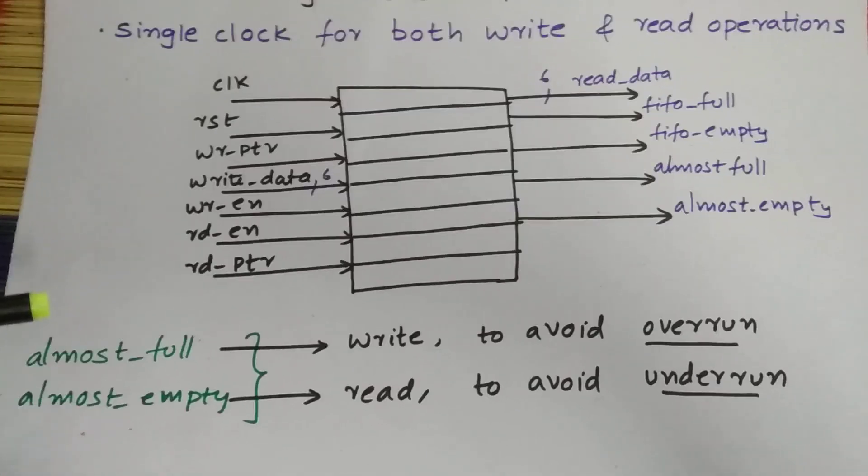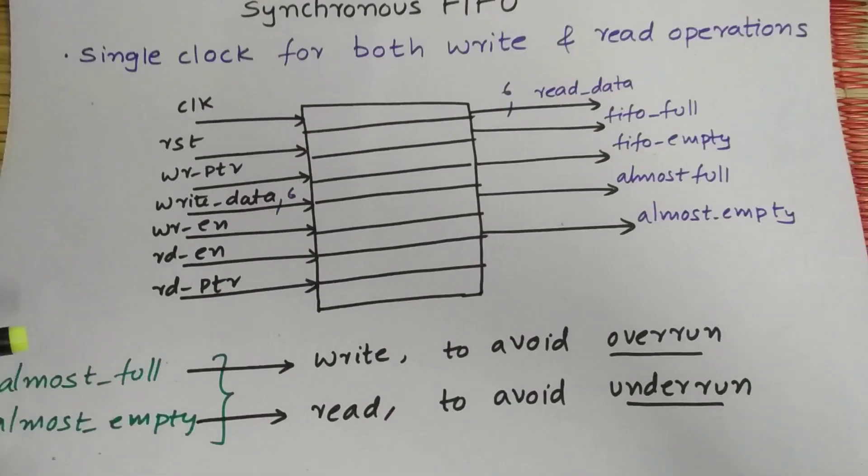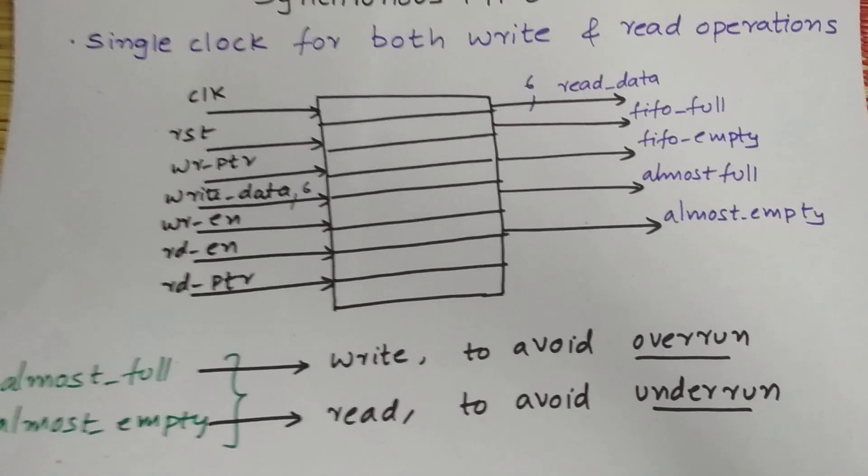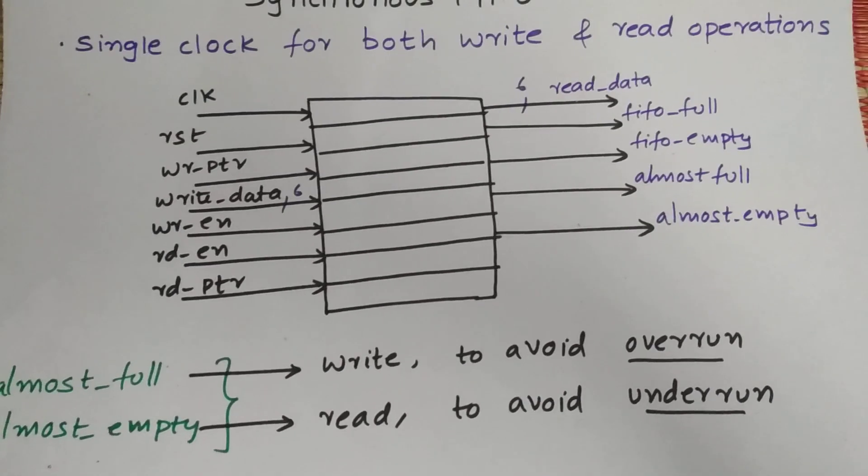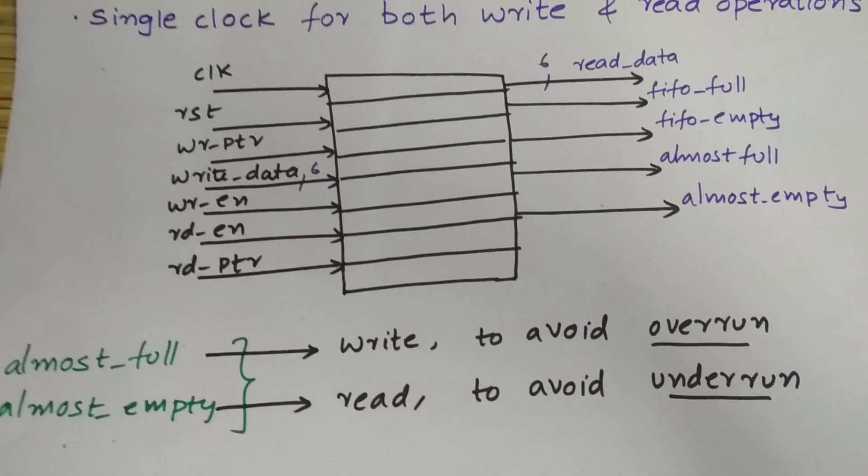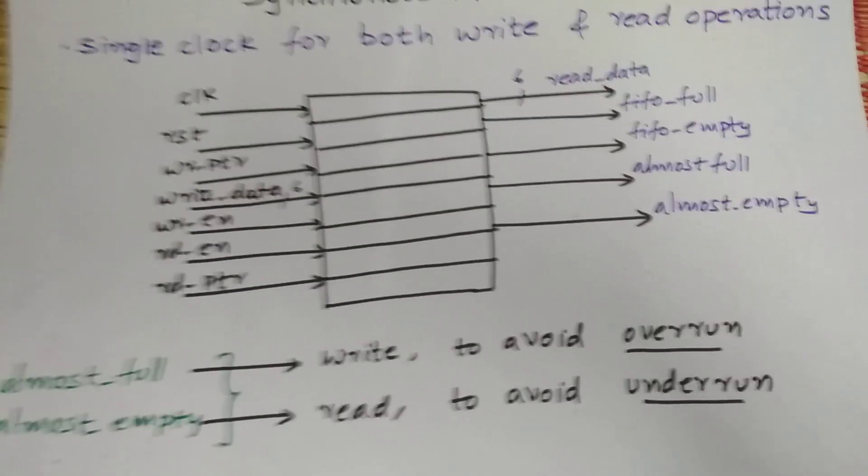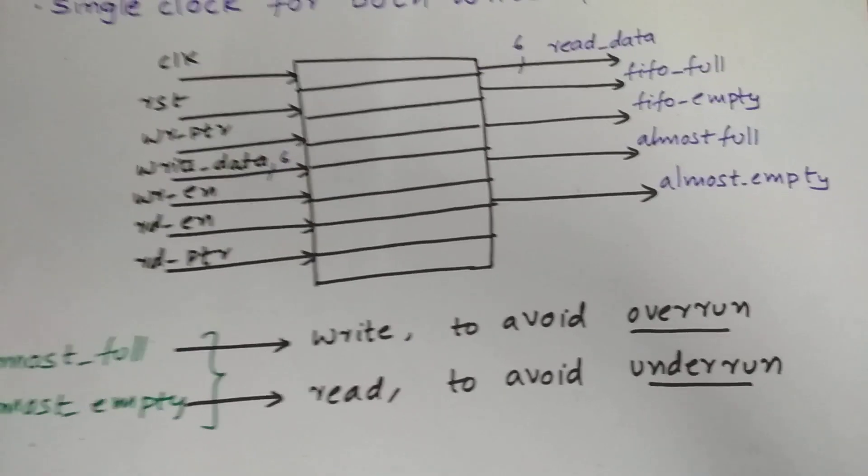What are overrun and underrun? Overrun is to write into a FIFO which is full, which is not acceptable. What is meant by underrun? Reading from an empty FIFO - there's nothing in the FIFO and we are reading it.